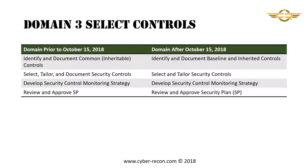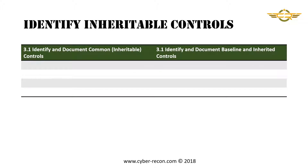Domain 3 remains relatively unchanged with slight modifications to the verbiage of the subject areas. Prior to October 15th, the subject areas are: identify and document common controls, select, tailor, and document security controls, develop security control monitoring strategy, and review and approve the security plan. After October 15th, the subject areas are: identify and document baseline and inherited controls, select and tailor security controls, develop security control monitoring strategy, and review and approve the security plan.